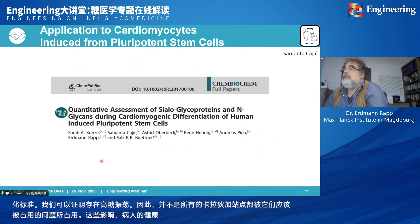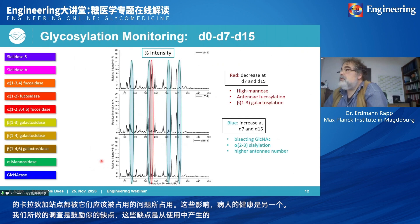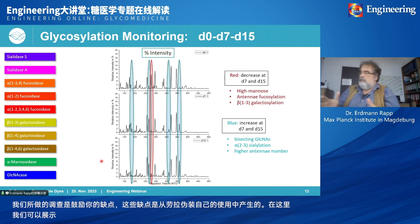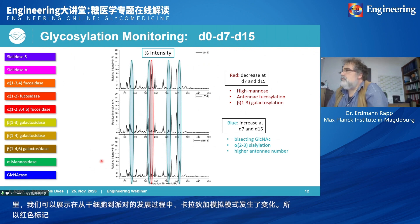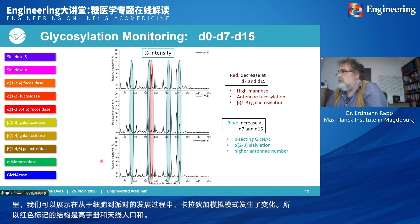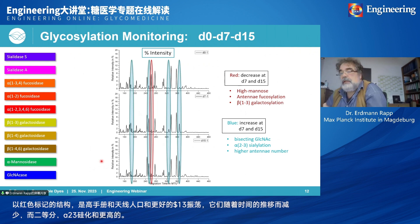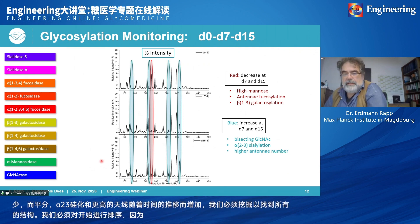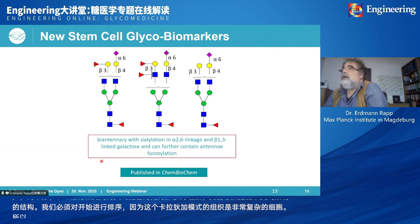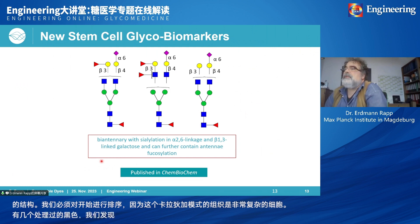Another investigation was on cardiomyocytes derived from induced pluripotent stem cells. We could show that during development from stem cells to cardiac cells, the glycosylation pattern changed. The red-marked structures — high mannose, antennary core-fucosylation, and beta-1,3-galactosylation — decreased over time, while bisecting structures, alpha-2,3-sialylation, and higher antenna numbers increased. We had to sequence everything down because glycosylation patterns of cells and tissues are very complex — several hundred glycans. Finally, we identified new stem cell glyco-biomarkers: three structures typical for the development from stem cells to cardiomyocytes.